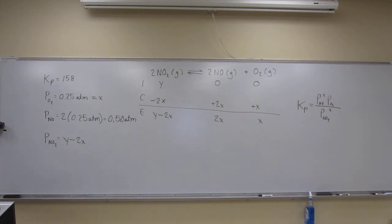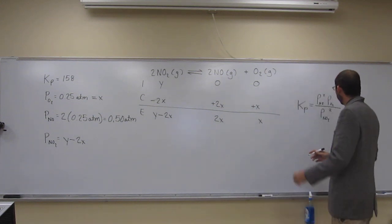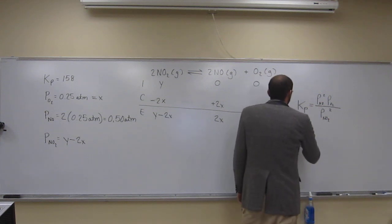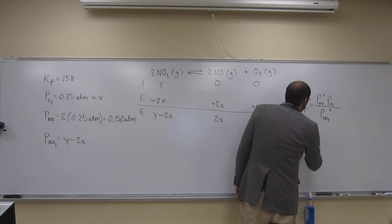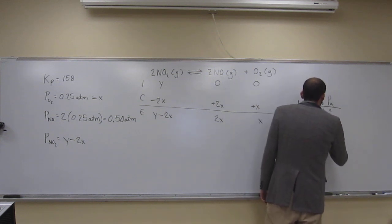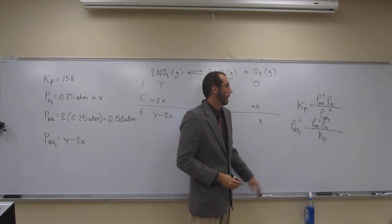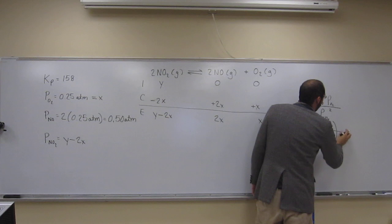So we could do the other problem a number of ways, but probably the easiest would be to just plug into the KP expression. So let's rearrange this KP expression to solve for the partial pressure of NO2, to solve for the partial pressure of nitrogen dioxide. So NO2 squared equal NO squared times O2 divided by KP, like that.